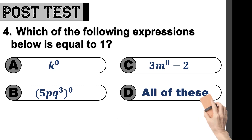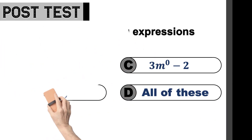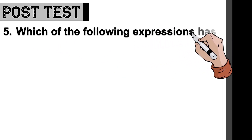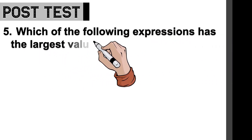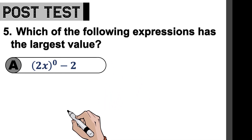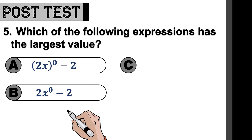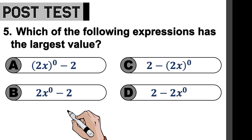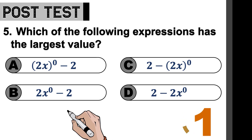Last question for our post-test. This is question number five: Which of the following expressions has the largest value? Is it A, the quantity of 2x raised to zero minus two? Or B, 2 times x to the power of zero minus two? C, 2 minus the quantity 2x raised to zero? Or letter D, 2 minus 2 times x to the power of zero? Time is up.